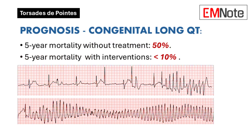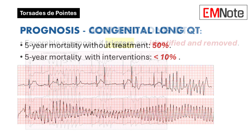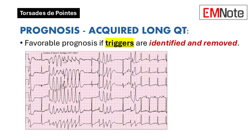Prognosis varies depending on the underlying cause. Without treatment, congenital long QT syndromes have a 5-year mortality exceeding 50%, which can be significantly reduced with appropriate interventions. In cases of acquired long QT syndrome, outcomes are favorable when the triggering factors are promptly identified and addressed.